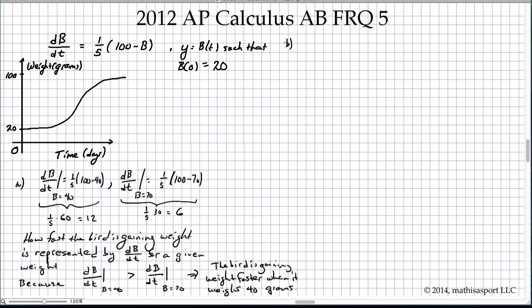They want us to calculate d²B/dt², the second derivative of B with respect to time. Well, we already have the first derivative and so we're just taking the derivative of this expression with respect to time. So that's just d/dt of 100 minus B.